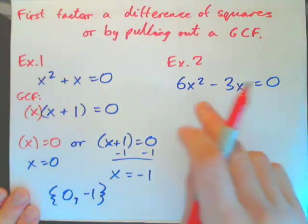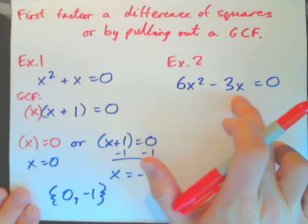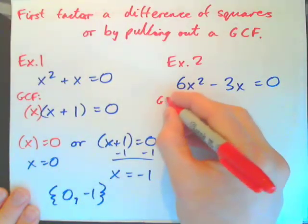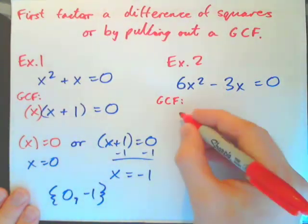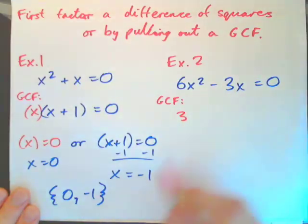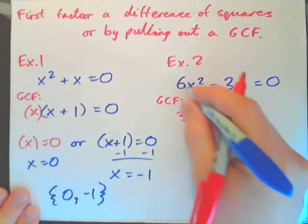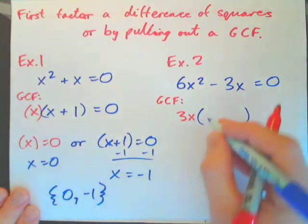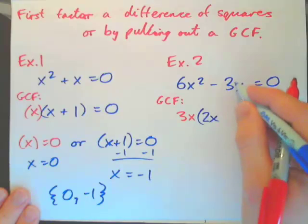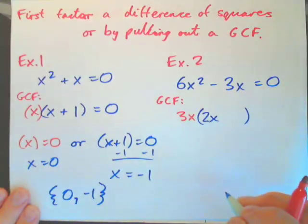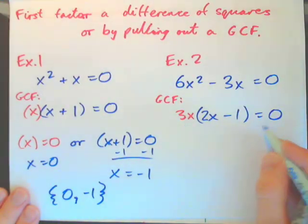The trick is, whenever we have an equation with an x squared in it, we should try to have 0 on one side and factor the left-hand side. If I factor this, the only way to do it is by pulling out a greatest common factor. 3 goes into both terms, and x goes into both terms, so pull out 3x. 3x times 2x gives 6x squared, and 3x times negative 1 gives negative 3x.